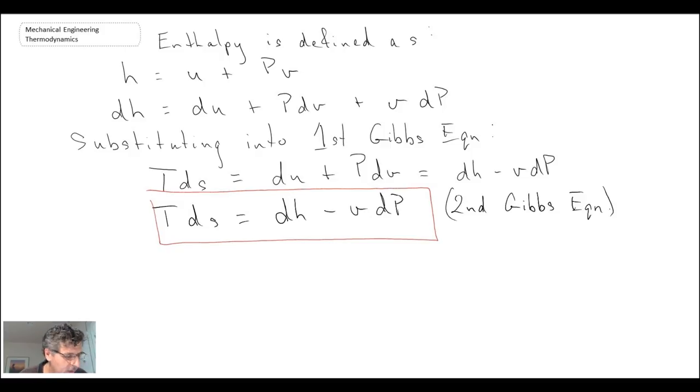Now what we're going to do is we're going to divide the equations by T. And we'll result in two equations now. So we're going to take the first Gibbs and the second Gibbs equation. So those are two equations in differential form for entropy. And then we're going to look at entropy in relation to other properties that we've already calculated in the course.